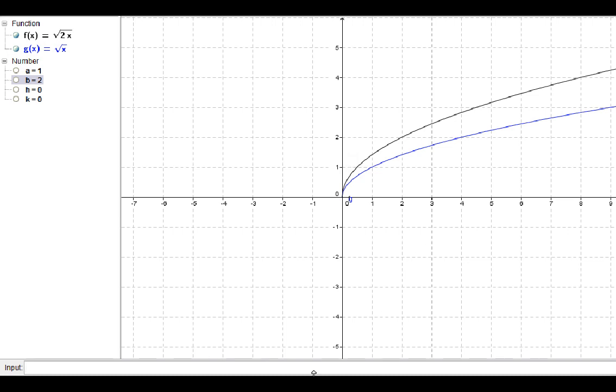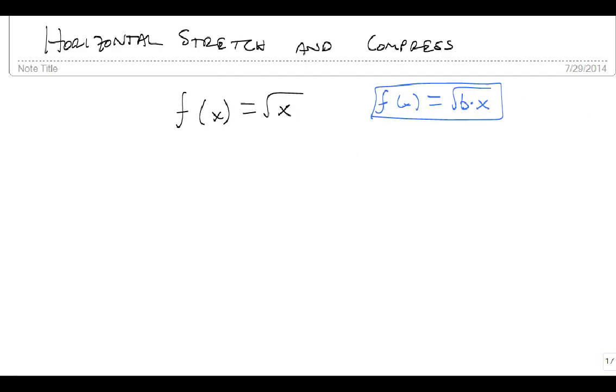So unlike our vertical, for our horizontal, if the absolute value of b is bigger than 1, then it compresses. It works backwards from the way the vertical did. That's the same thing with the shifting. Remember, shifting told you its sign. It was what it was for vertical. But for horizontal, you had to change it. A positive 3 actually went negative 3 to the left.